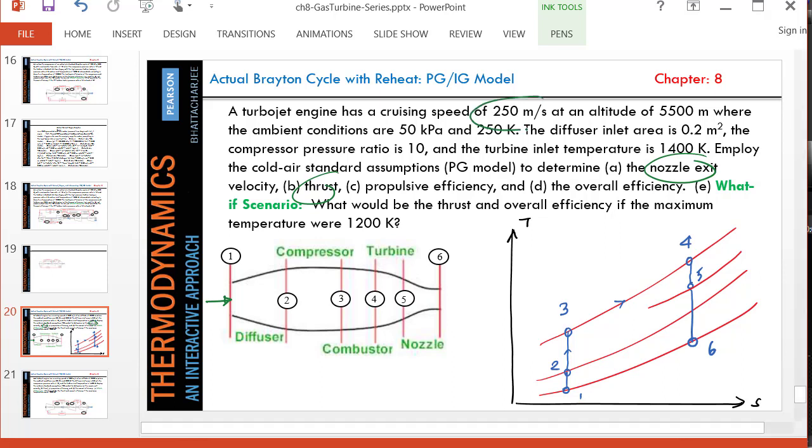The aircraft speed is same as speed that the diffuser sees. The conditions are 50 kPa, so pressure and temperature at state one are given, as well as the diffuser inlet area. Everything about state one is given to us. We can find state two because it's isentropic to state two and the velocity will be converted to a very small velocity, zero velocity.